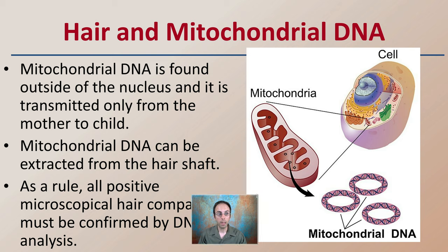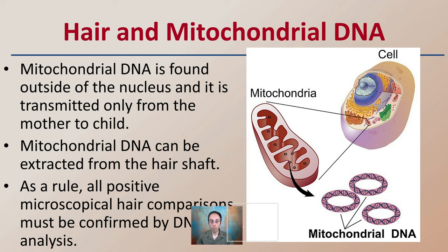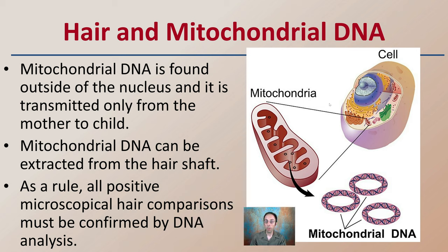Looking at hair and mitochondrial DNA: mitochondrial DNA is found outside the nucleus and is transmitted only from the mother to child. Ideally, nuclear DNA is what we want to find, but mitochondrial DNA should not be overlooked because it can be extracted from the hair shaft. As a rule, all positive microscopic hair comparisons must be confirmed by DNA analysis. Mitochondrial DNA, though only tied to the maternal line, can still help eliminate potential suspects to get closer to that individual characteristic.